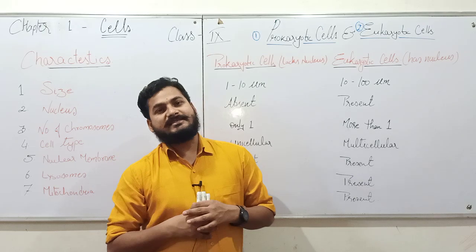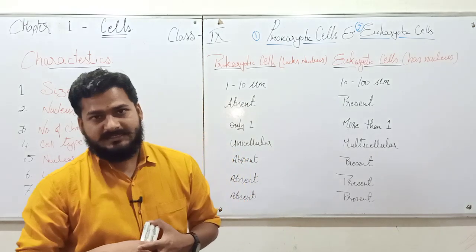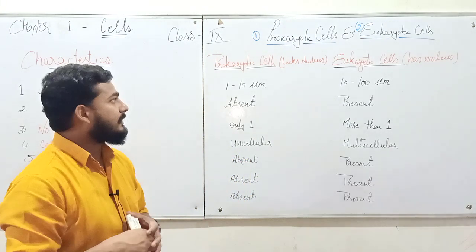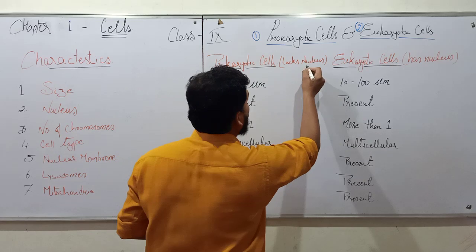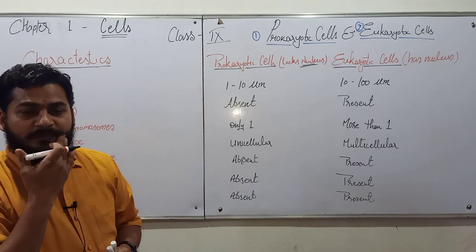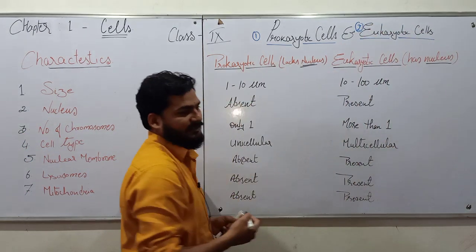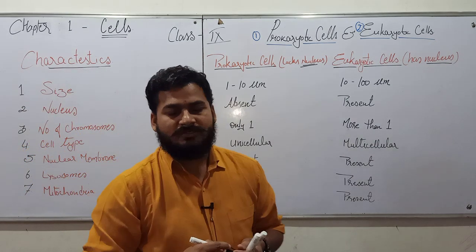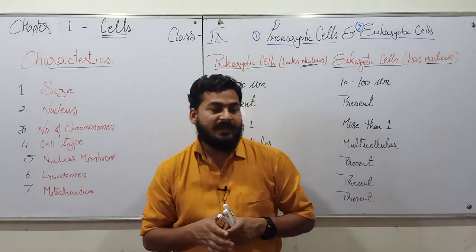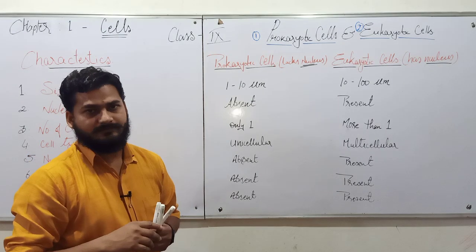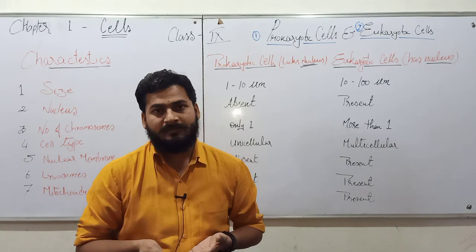The eukaryotic cell has nucleus. If we try to define them: the type of cell which does not possess a complete or true nucleus is termed to be a prokaryotic cell, and the one which possesses a true nucleus is called the eukaryotic cell. So the basic difference between prokaryotic and eukaryotic cells is the presence or absence of nucleus.